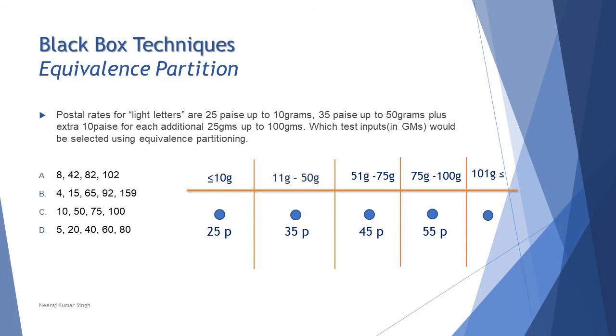The question says which test inputs would be selected using equivalence partition. From equivalence partition we understand that we have to take any one value from each partition. Let's start with option A: it says 8, that's in the first range; 42, that's in the third range; 82, that's in the fourth range; and 102, that's in the fifth range. They have not taken any value from the second range, that is between 11 to 50.